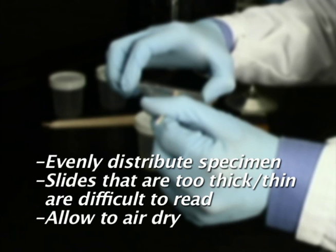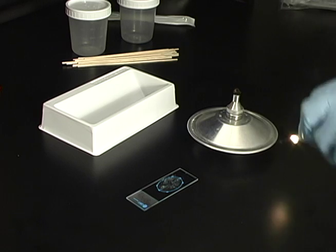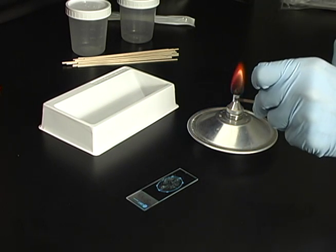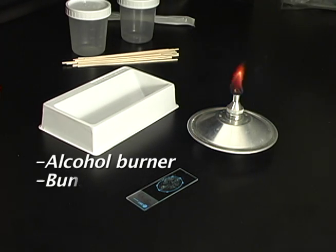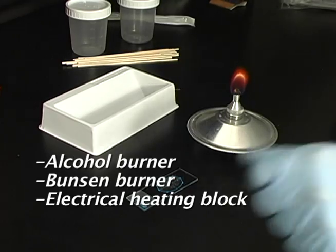Allow the slide to air dry. Once the specimen has dried on the slide, heat fix the slide using an alcohol burner, Bunsen burner, or electrical heating block.